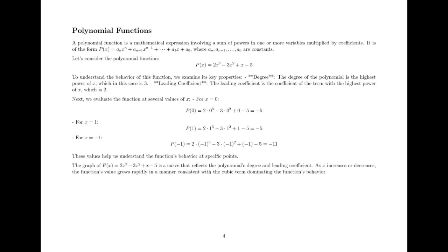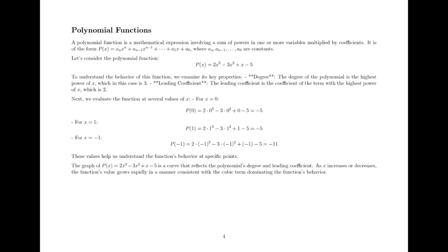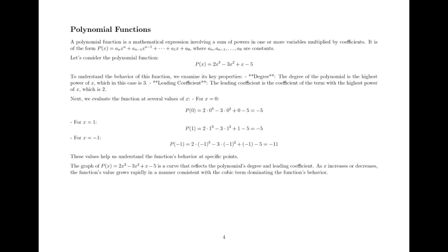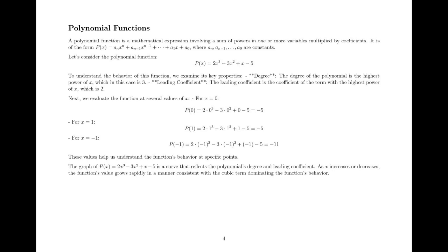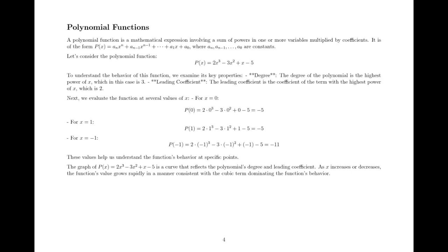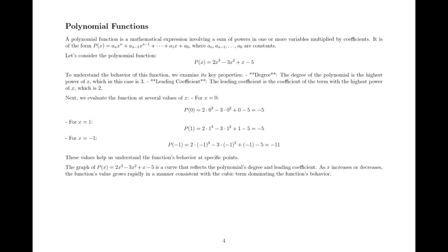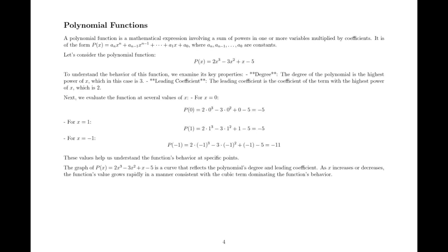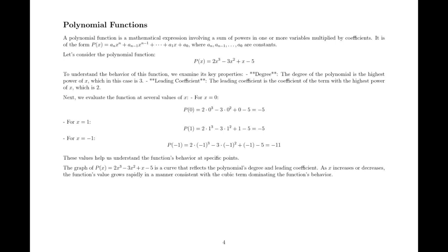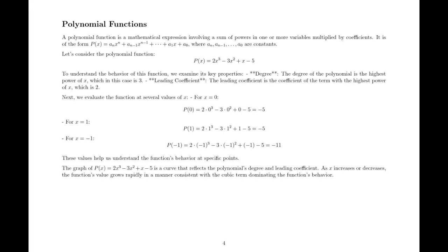Let's consider the polynomial function p(x) = 2x³ - 3x² + x - 5. To understand the behavior of this function, we examine its key properties. The degree of the polynomial is the highest power of x, which in this case is 3. The leading coefficient is the coefficient of the term with the highest power of x, which is 2.